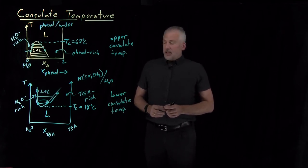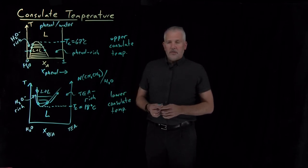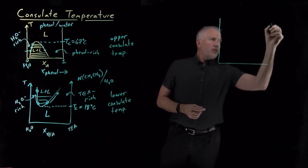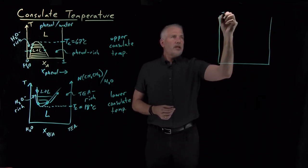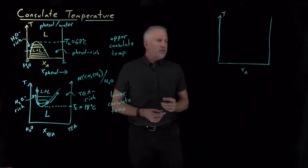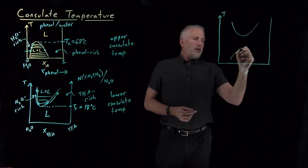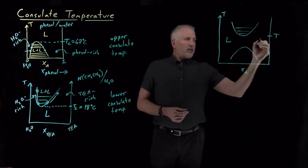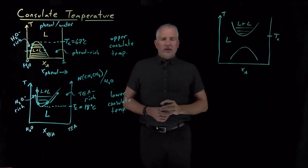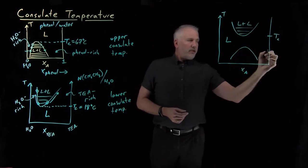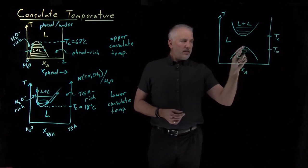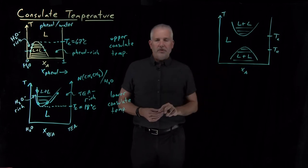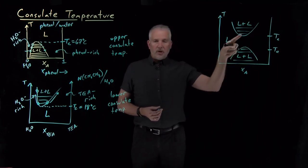It gets more complicated still. There are particular combinations of solvents that have both an upper and a lower consulate temperature. I'll draw another phase diagram — this one is not too atypical for polymer blends. Again, a temperature-composition diagram. You can find cases where there's a single liquid phase, but if I increase the temperature beyond a lower consulate temperature, I get phase separation between the two liquids. Conversely, if I cool below the upper consulate temperature, I get phase separation into an A-rich and a B-rich form. So this is a case where there's both an upper and a lower consulate temperature.